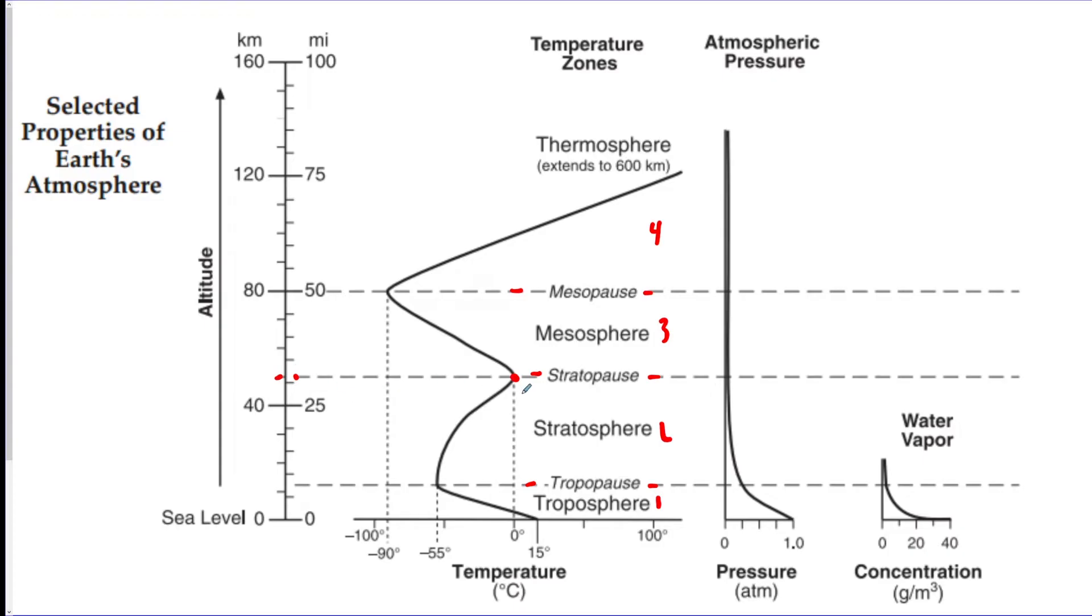The temperature at that spot would be zero degrees Celsius, which is on the bottom. If you picked this spot on the mesopause, that is 50 miles high, 80 kilometers high, and the temperature there is negative 90 degrees Celsius. So you could pick any spot on the black line and be able to do that.